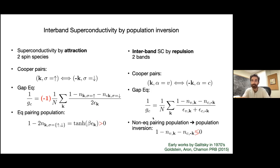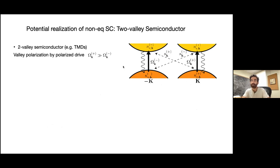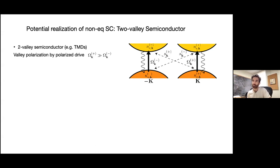How is valley-selective preparation possible? In transition metal dichalcogenides, the two valleys K and K' can be addressed by circular polarization: sigma-plus light couples to one valley, sigma-minus to the other. This has been demonstrated in multiple systems. By applying circularly polarized light, one can independently populate the two valleys, preparing distributions in each flavor that allow the overall sign of the pairing term to be tuned.